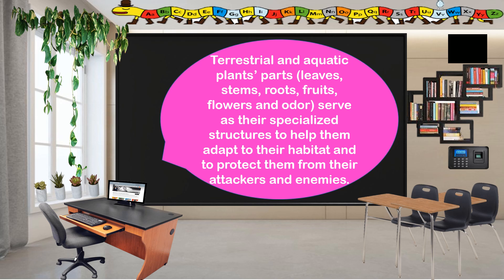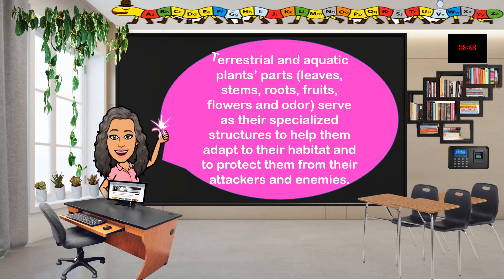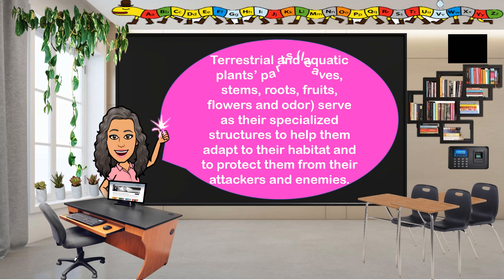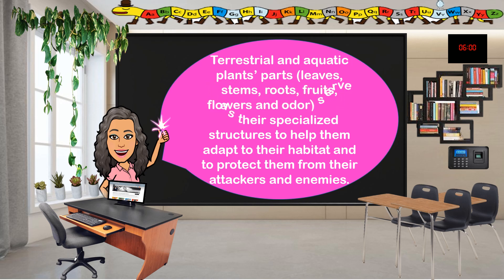Terrestrial and aquatic plants have parts like leaves, stems, roots, fruits, flowers, and others that serve as their special structures to help them adapt to their habitat and to protect them from their attackers and enemies.